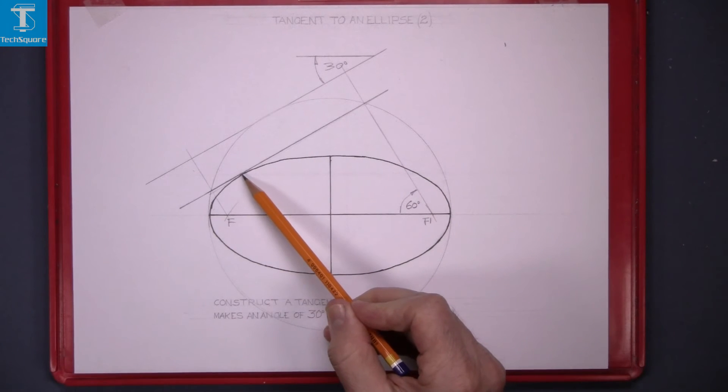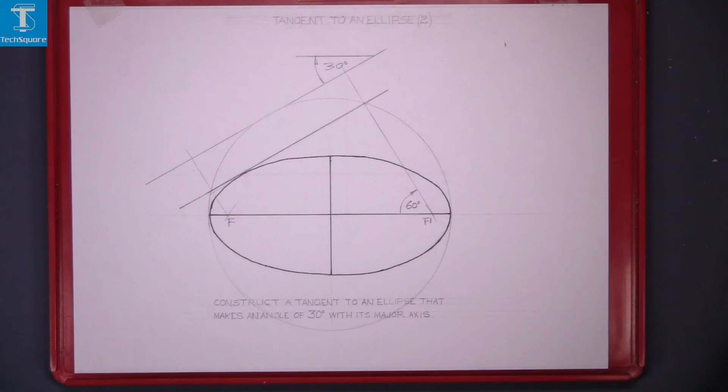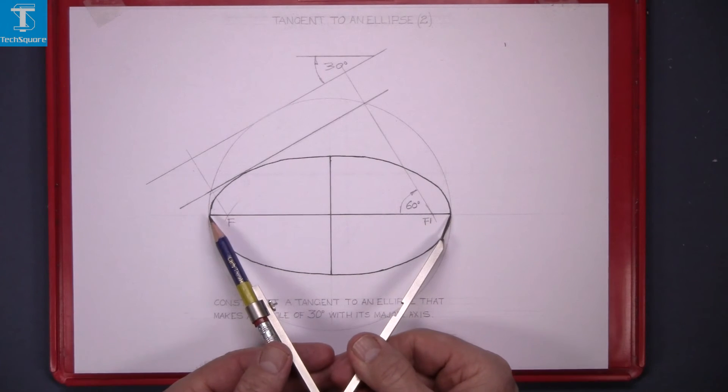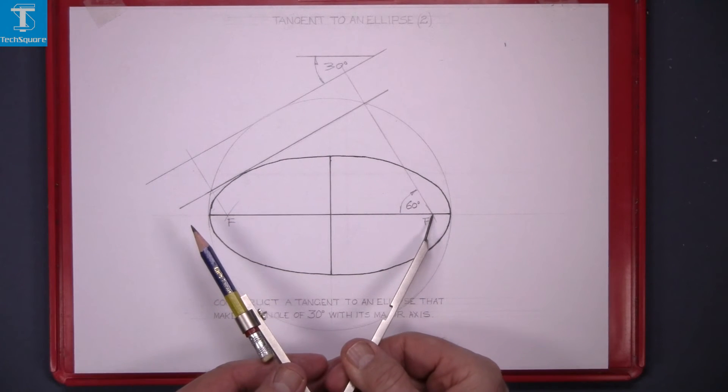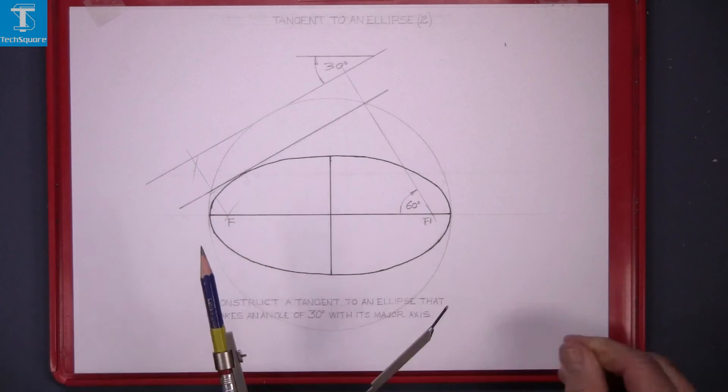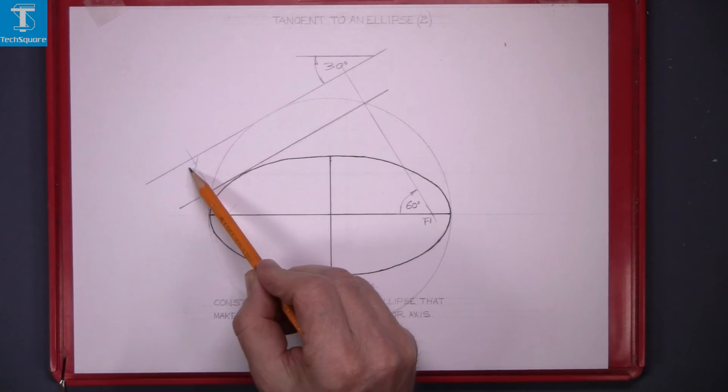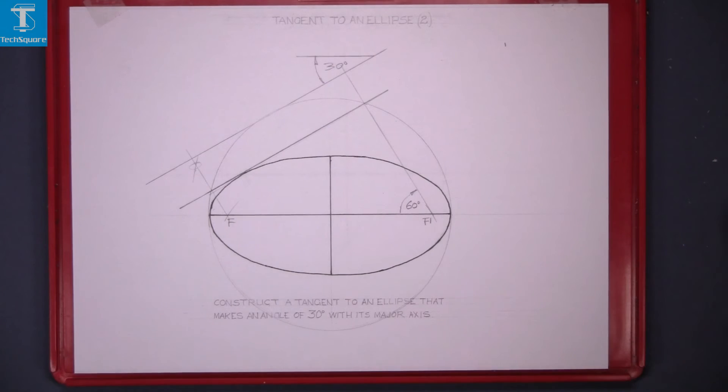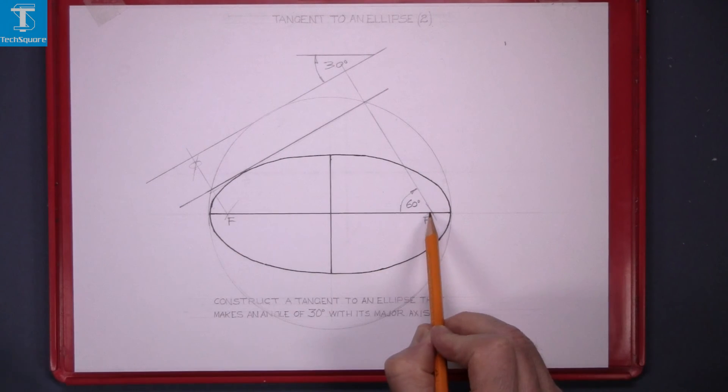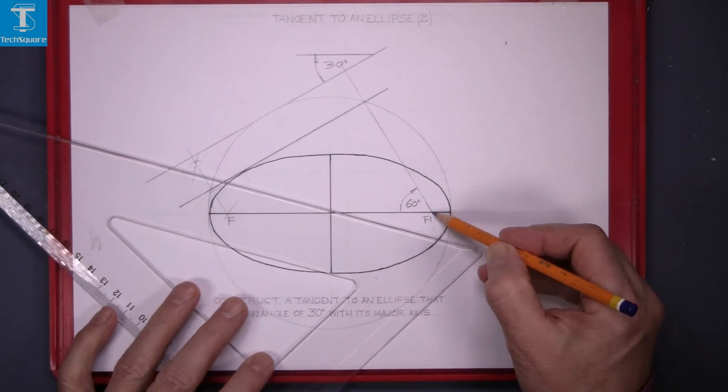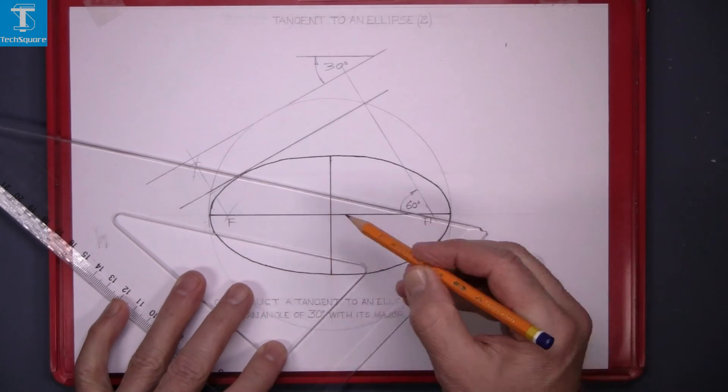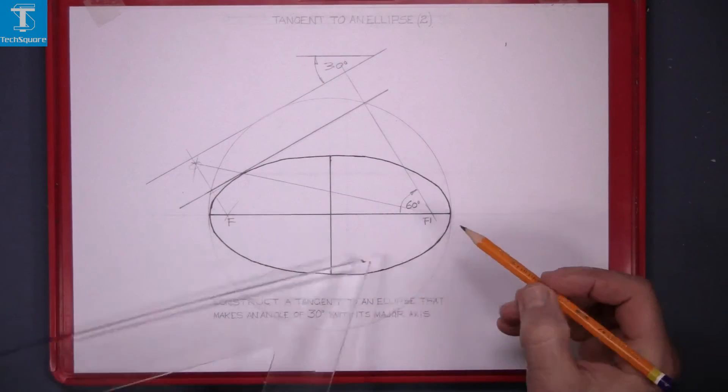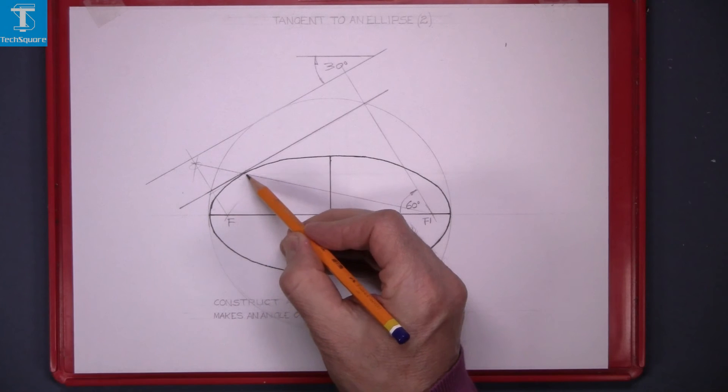To get the point of contact, set the compass to the major axis. Put the point of the compass in F1 and draw an arc to cut the 60 degree line, and that gets you a point there. Join that point back to F1, and that gives you the point of contact there.